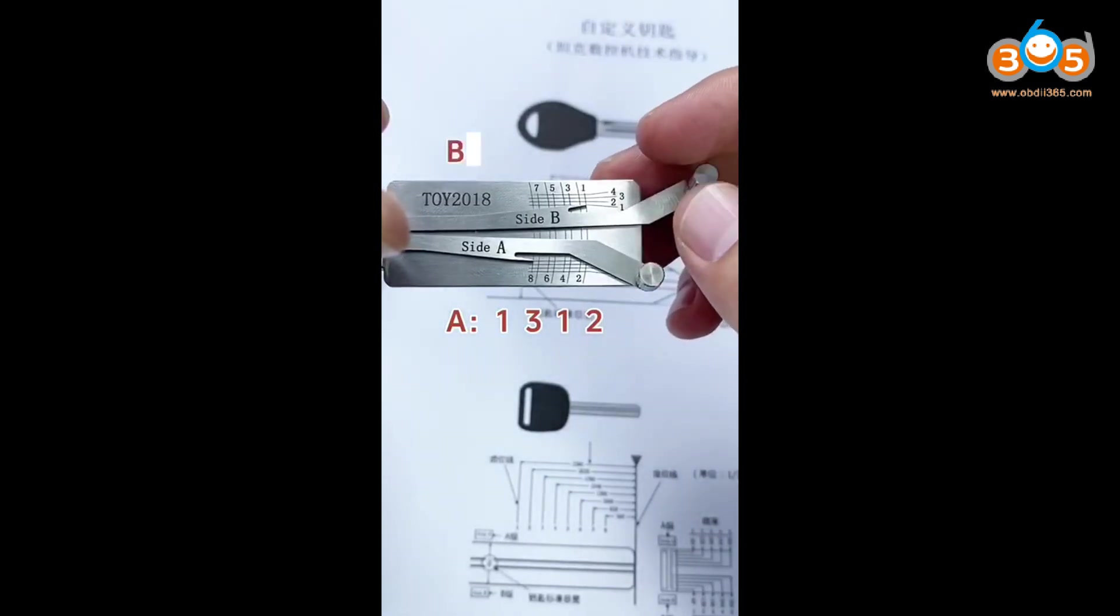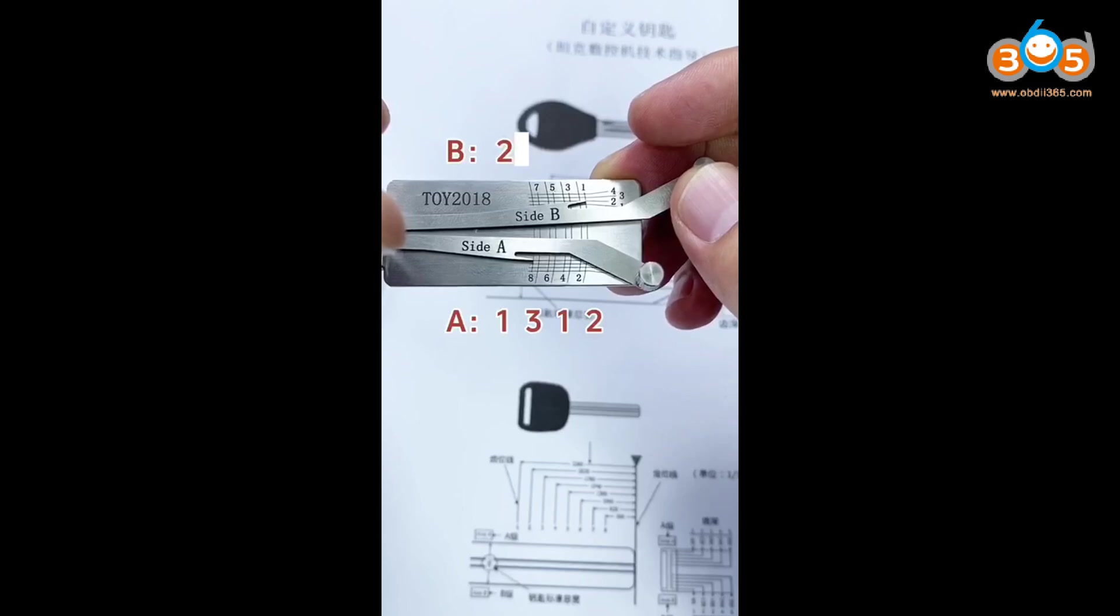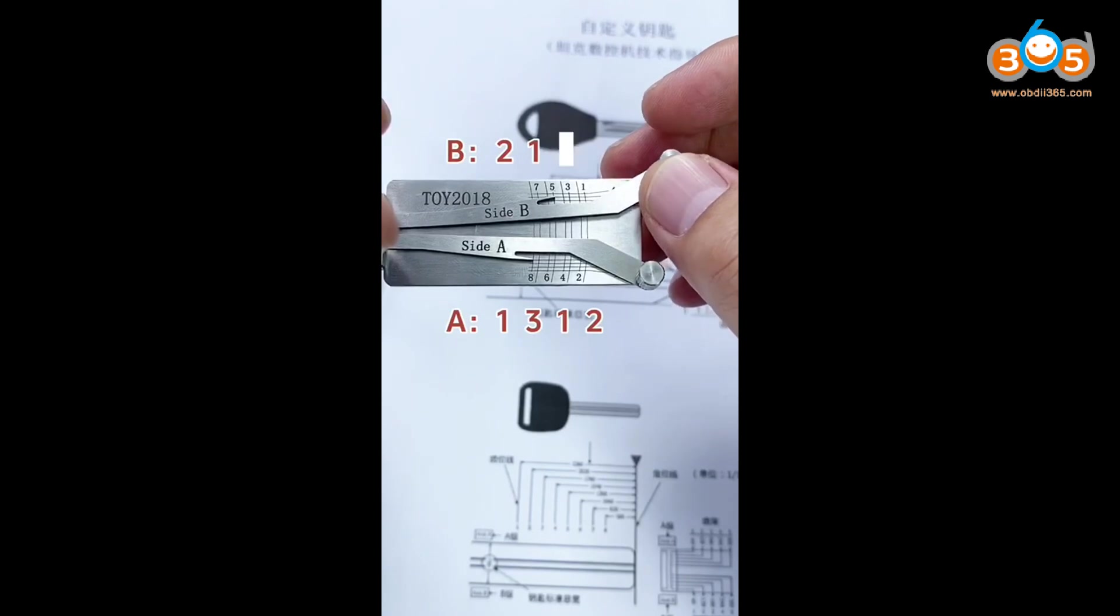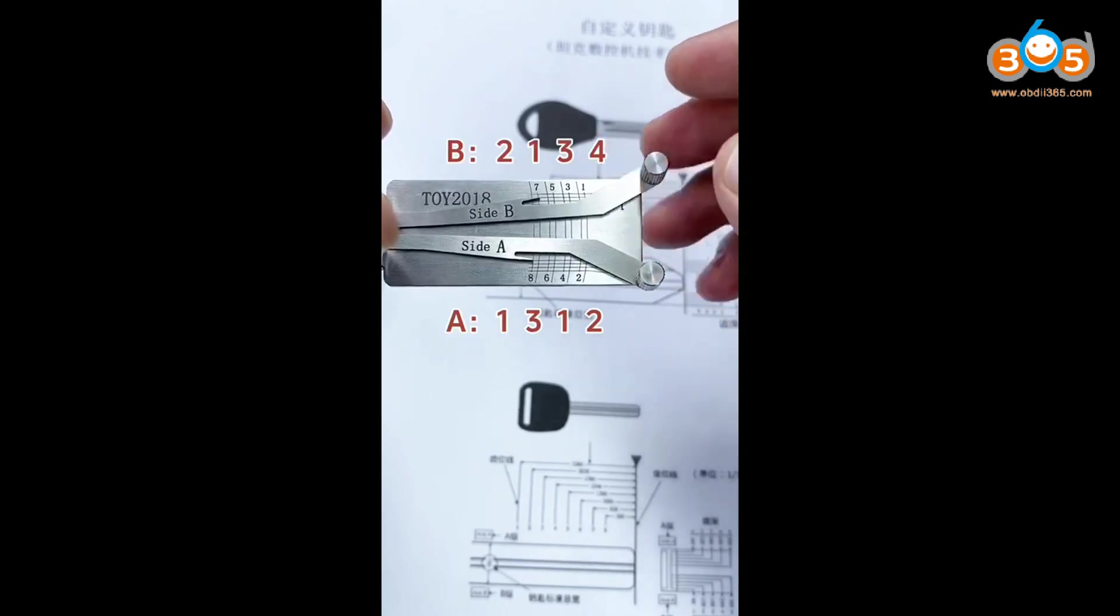Let's use the Lifter B. The first is two. The second is one. The third wafer is three. The fourth position is four. All key bittings ready.